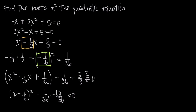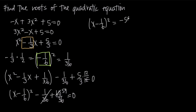So this is going to be positive 59 over 36. When we subtract 59 over 36 from both sides, we're going to get x minus 1 sixth, quantity squared, is equal to negative 59 over 36.